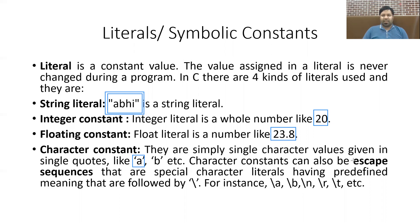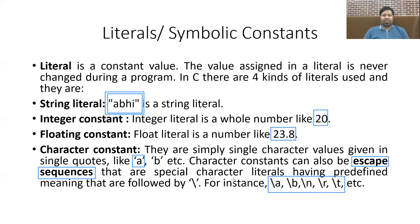There is also a list of escape sequences used in programs, which are also known as character constants. Examples include \a, \b, \n, \r, and so on — all starting with a backslash and having predefined meanings. For example, \a is for alert and produces a bell sound, \b is for backspace, \n is for new line, and \r is for carriage return. These are the four types of constants you can use.